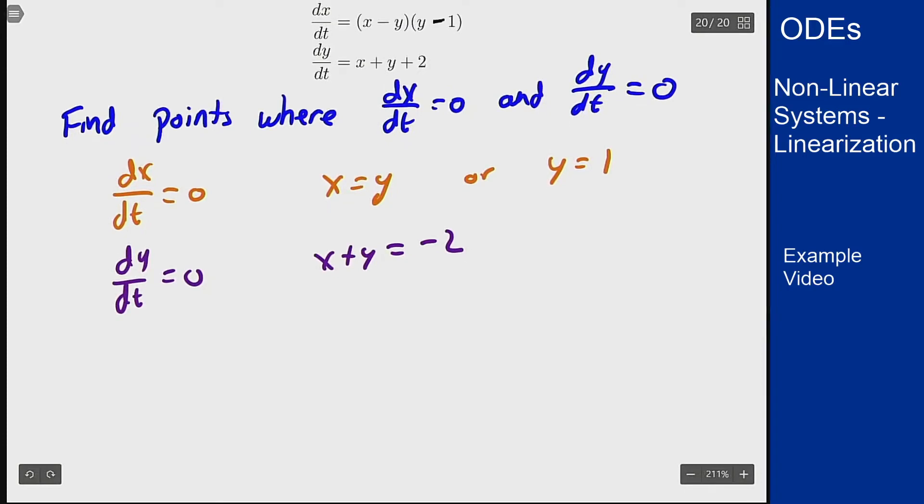In the first case if x equals y this becomes x plus x equals minus 2 or x equals minus 1 and so then y is also minus 1 giving us the point (-1, -1).